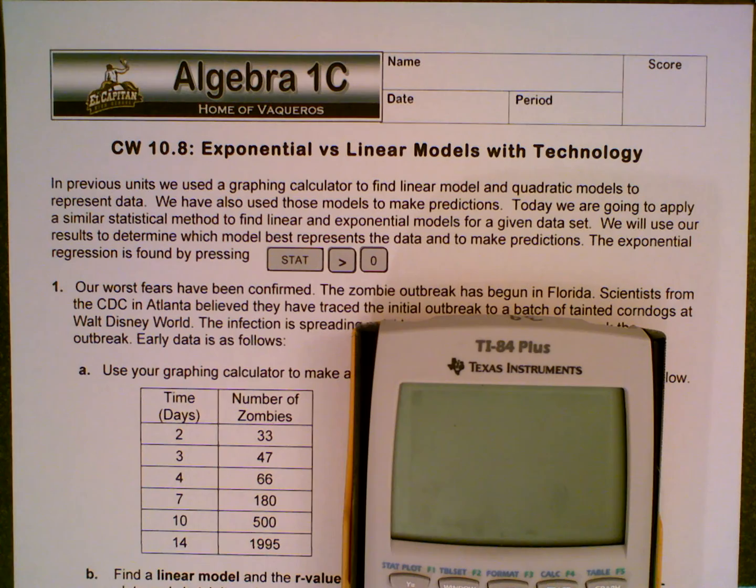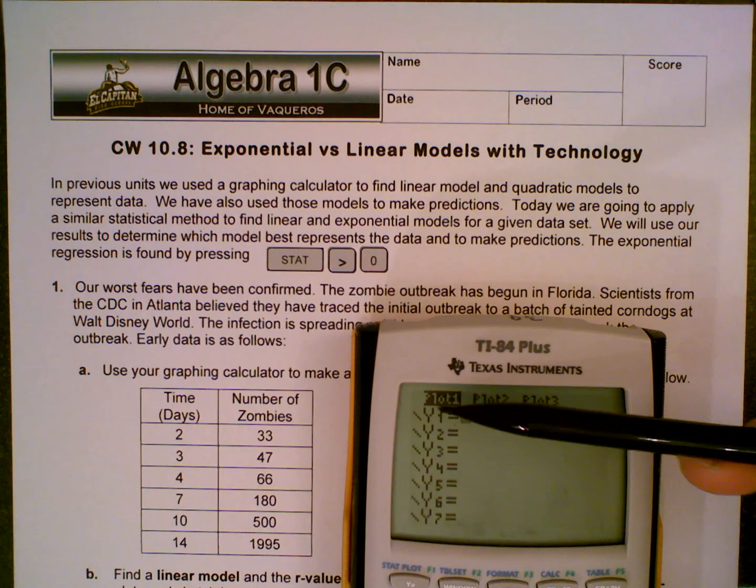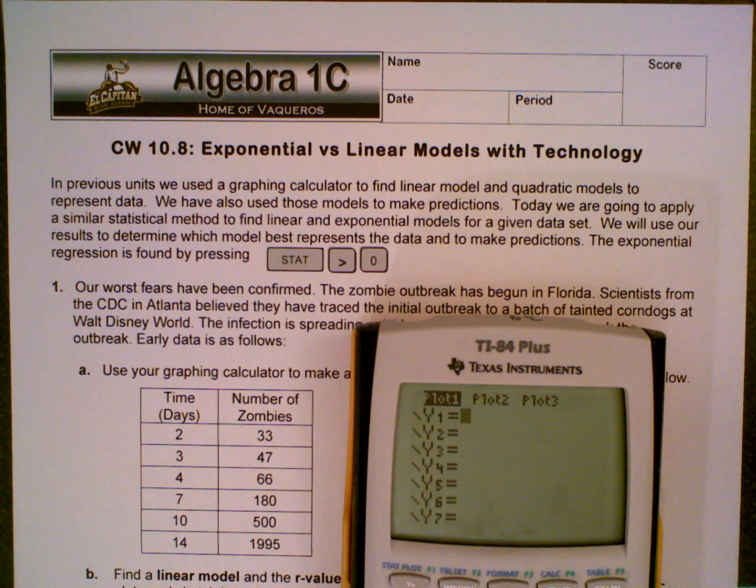Alright, next thing we want to do is we want to turn our stat plot on. So from your main screen you're going to hit y equals in the top left. You're going to hit up, enter, down. Now you should see that plot 1 should be highlighted with a dark black background. So if your calculator screen does not look like this right now, once again, replay the video and make sure you find those directions. If it still doesn't look like that, go ahead and raise your hand and it will help you out.